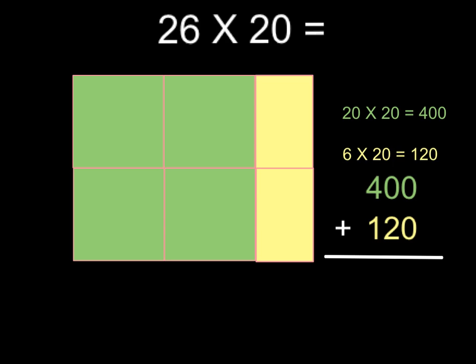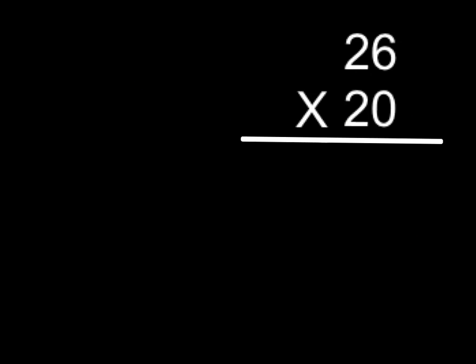If you remember last time in part one, we built or drew an array. We found partial products and we added them together. This is really doing the same thing, but using what looks like the standard algorithm. So we're going to set it up just like we're going to multiply using the standard algorithm.